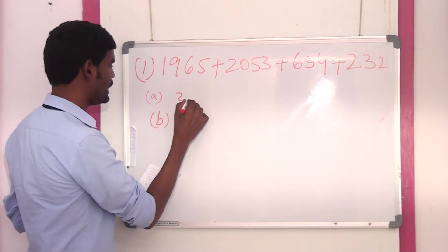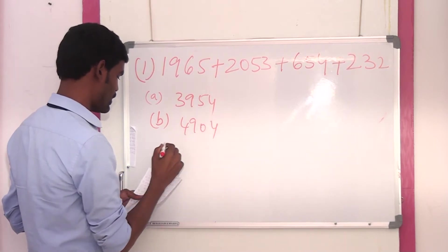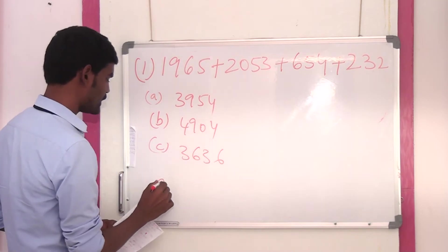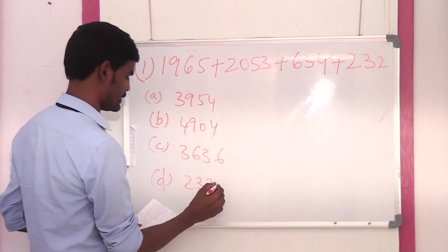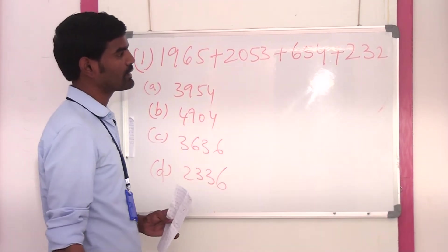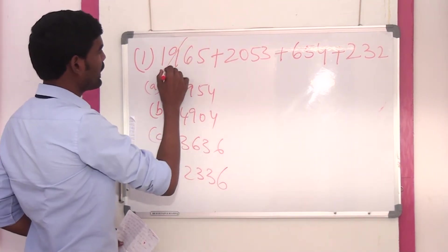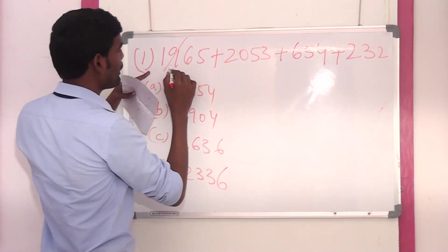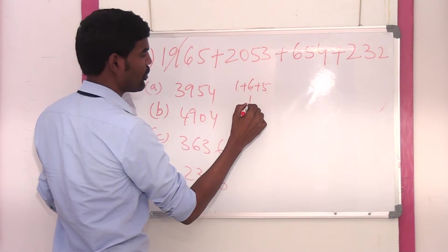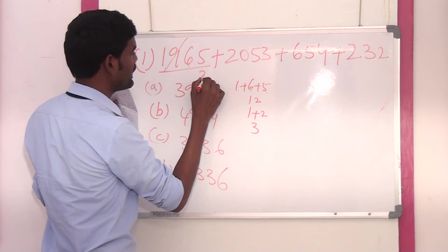Our first question is 1965 plus 2053 plus 654 plus 232. Options: A is 3954, B is 4904, C is 3636, and there is also 'none of these.' So we can apply the digit sum method. The digit sum of 1965: 9 is cancelled, 1 plus 6 plus 5 gives 12, so 1 plus 2 is 3. The digit sum of 2053: 2 plus 0 plus 5 plus 3 gives 10, so 1 plus 0 is 1.